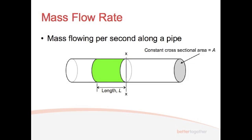The next one we're going to look at is mass flow rate. This is essentially very similar to volumetric flow rate, except we're dealing with mass as opposed to volume. We have the same pipe with cross-sectional area A and an element in the pipe with length L. As before, the volume is A times L. Now to get the mass from the volume, you have to multiply the volume by the density — our rho symbol. So the mass of fluid is rho times A times L.